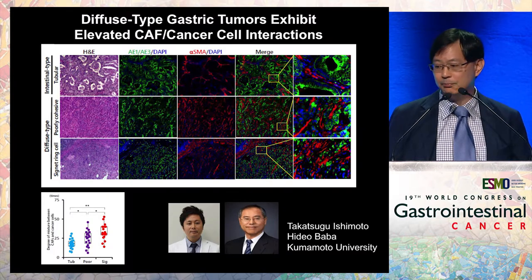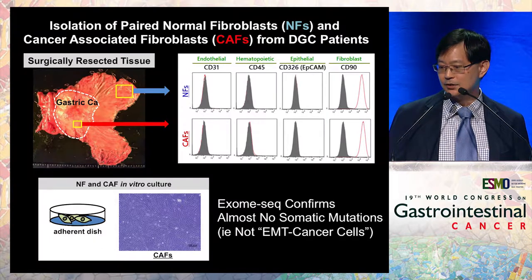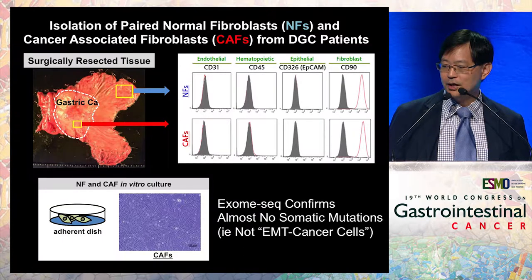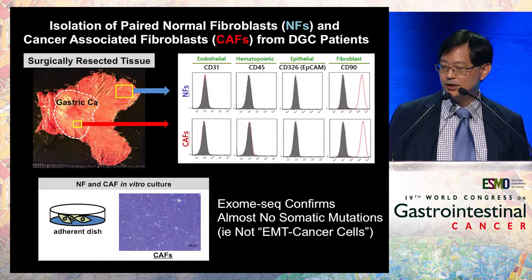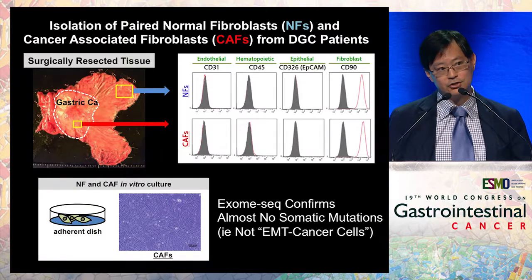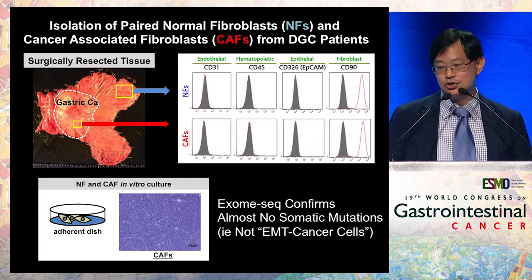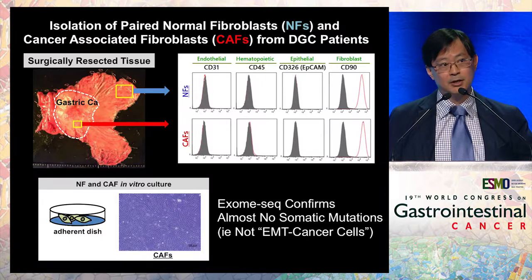To go beyond histological pictures, we've taken surgically resected tissues from patients with diffuse type, scirrhous gastric cancer, and also adjacent normal tissue. By using a variety of different markers, we can sort out different cell populations in each tissue compartment — isolating endothelial cells, hematopoietic cells, and for this talk, the fibroblasts. We can get the normal fibroblasts and the cancer fibroblasts from each patient in a paired way. Once isolated, you can do short-term in vitro cultures, add drugs, co-incubate them, and look at changes that occur. Importantly, when we do sequencing of these fibroblasts, they almost have no somatic mutations — so these are true stromal fibroblasts, not cancer cells that have undergone EMT.